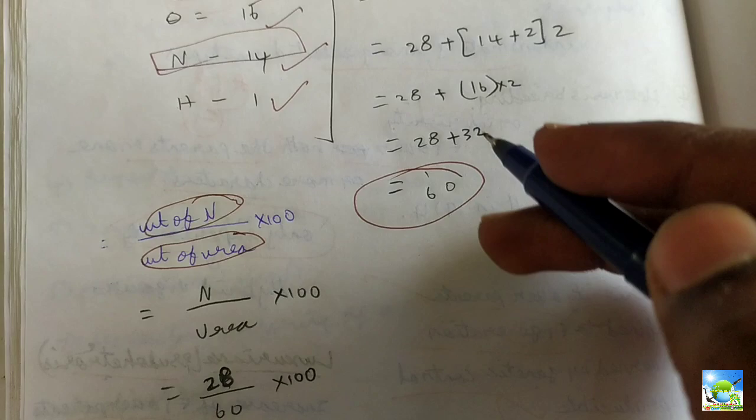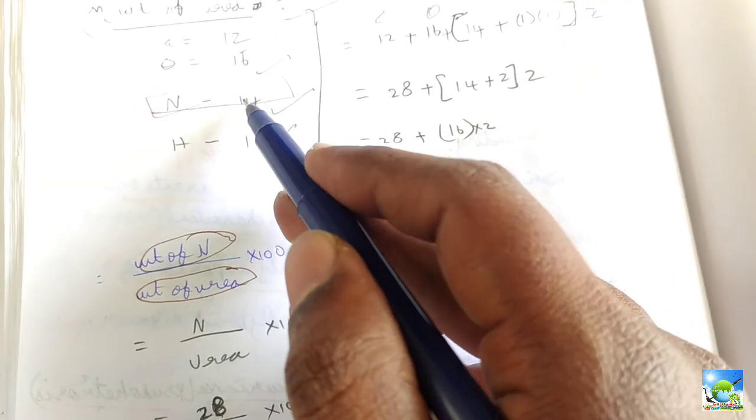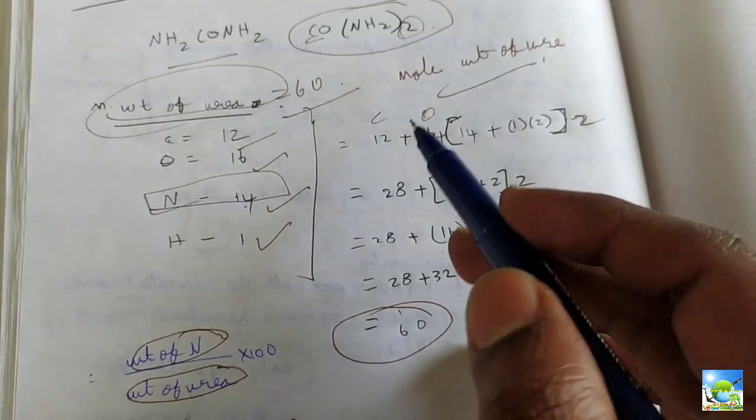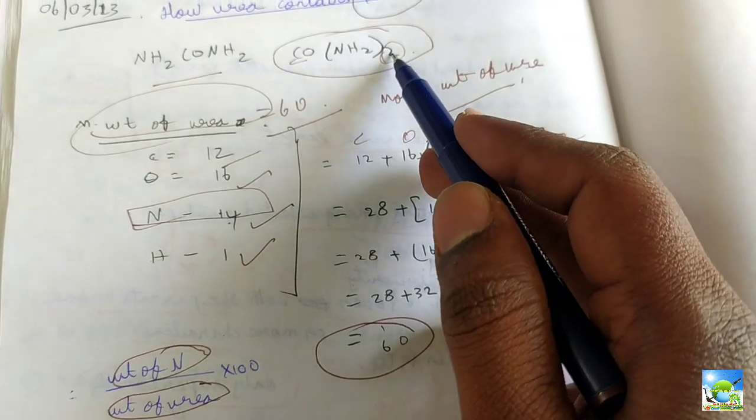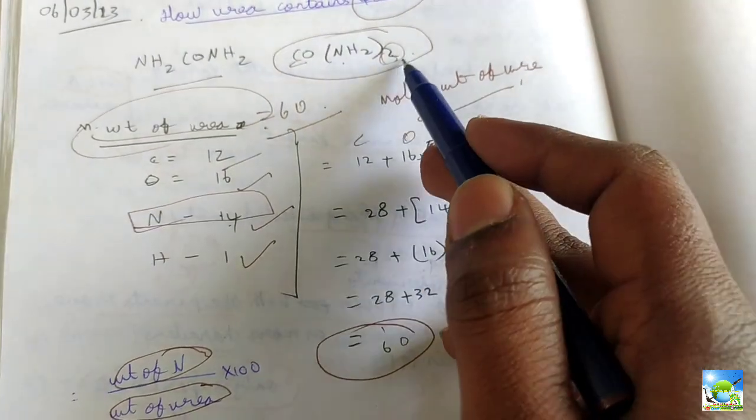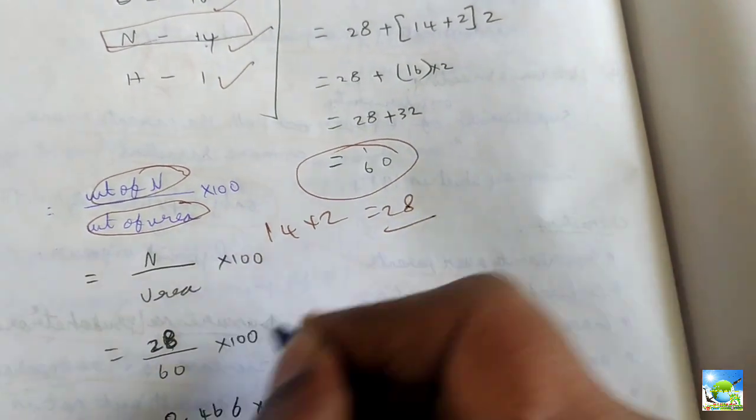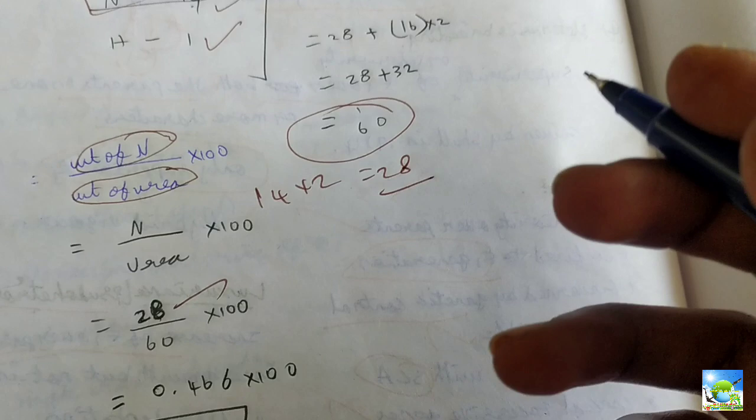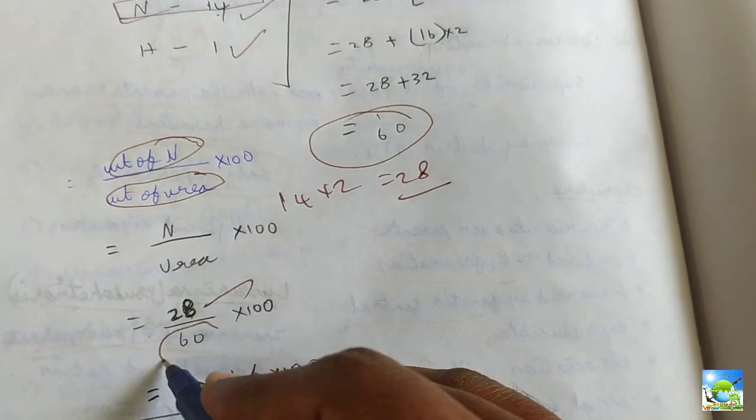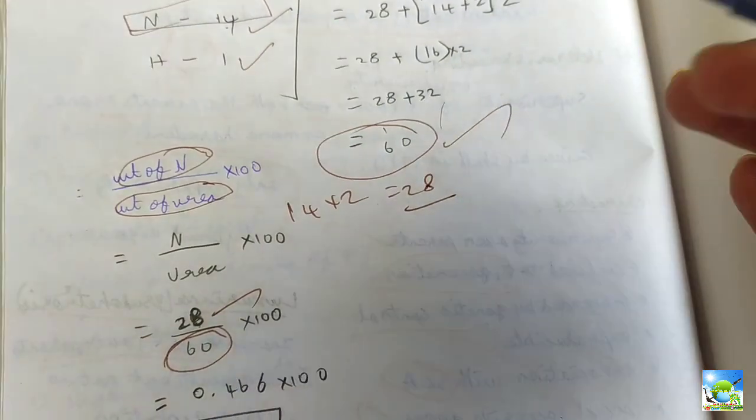Here, the molecular weight of nitrogen for one molecule is 14, but there are two molecules. We have written twice, 2 times N. So 14 into 2, we will get 28. We have written here 28 divided by 60. This 60 is the molecular weight of urea.